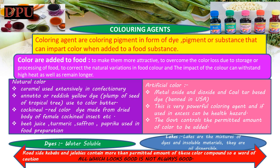Lakes are mixtures of dyes and insoluble materials. They are oil-dispersible and more stable than dyes, ideal for coloring food products containing fats and oils or items lacking sufficient moisture. They are used in cake and dough mixes, hard candies, chewing gum etc. Local names include: Brilliant Blue FCF, Yellow No. 13, Blue, Fast Green, Allura Red and Sunset Yellow.